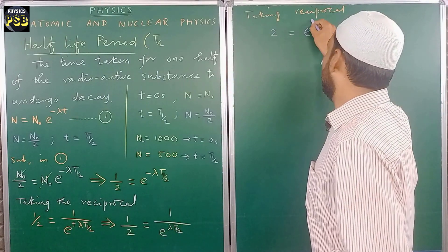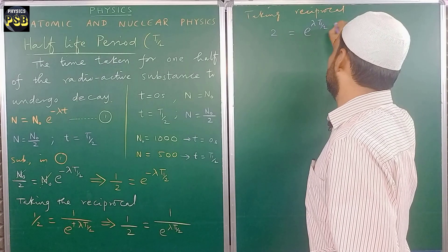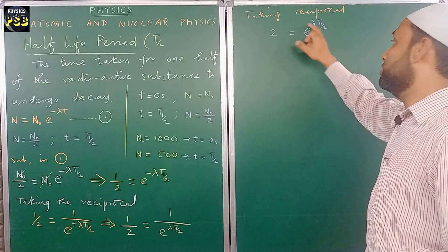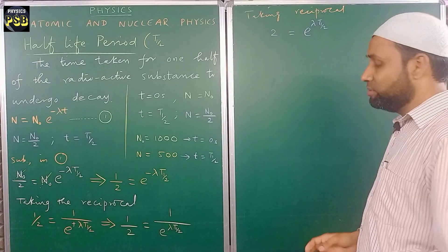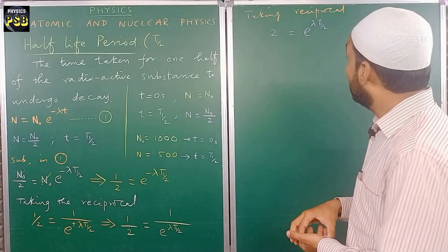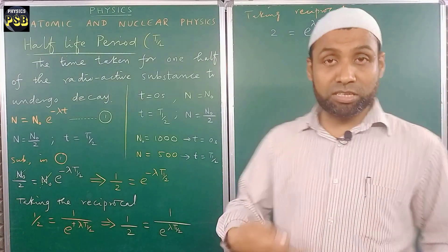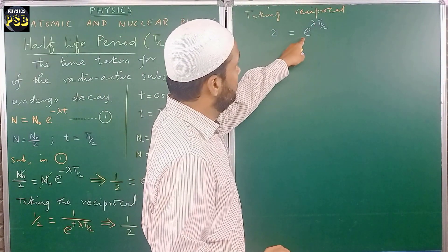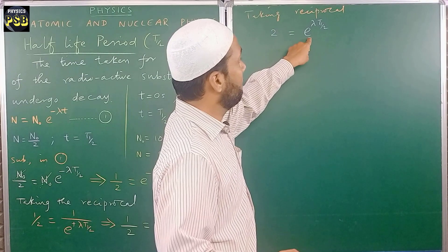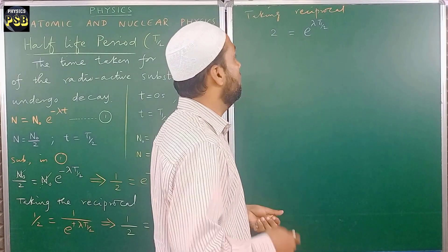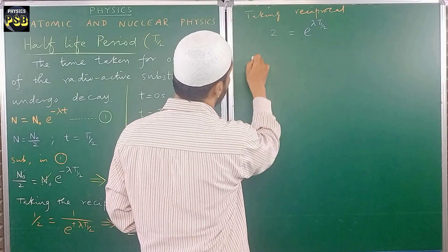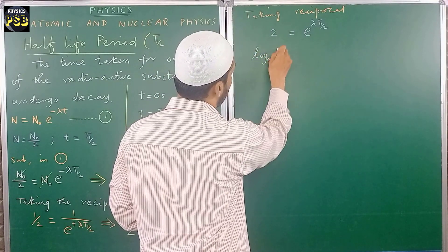If I invert, this becomes 2. In a similar way, this side the term present in denominator will go to the numerator: e to the power lambda t half. After this, now I am going to cancel the exponential term. To cancel exponential term, I will follow the reverse process, the reverse phenomena of the exponential is natural log.